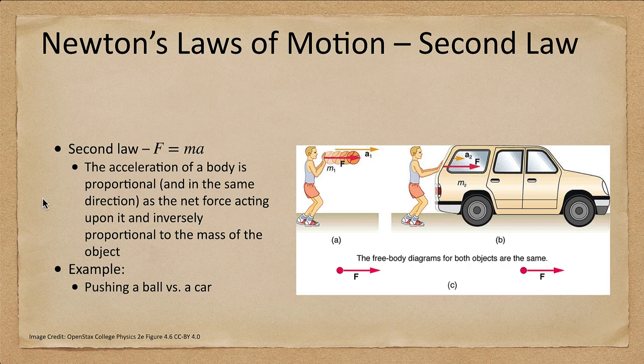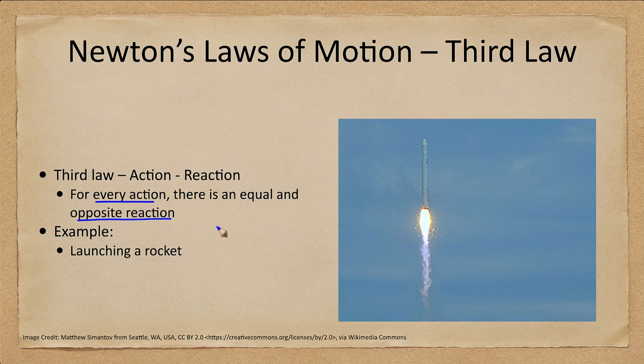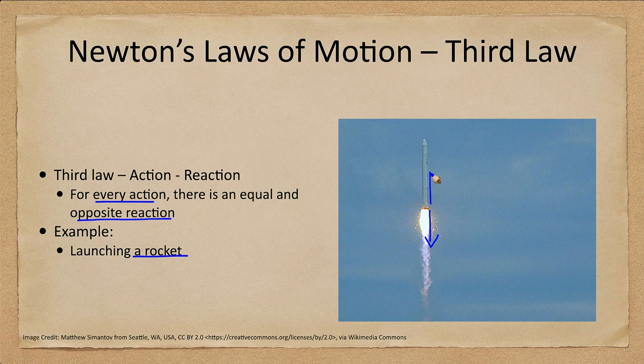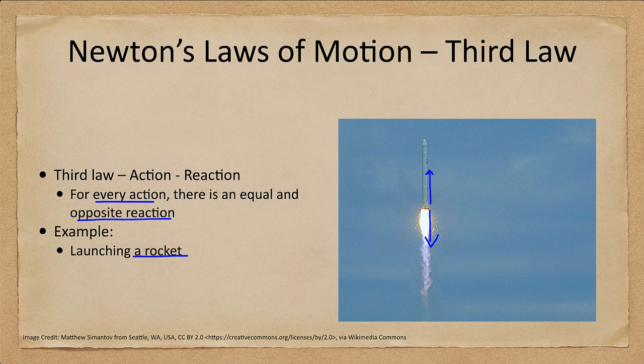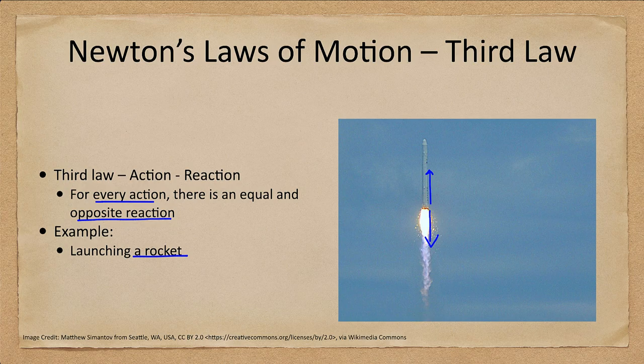All right let's go ahead and look at the third law then. The third law, sometimes called action and reaction, for every action there is an equal and opposite reaction. So launching a rocket is one example of this. The material is expelled downward at a very high speed and the reaction then pushes the rocket up and launches it into space. So it is an example of Newton's third law of motion.